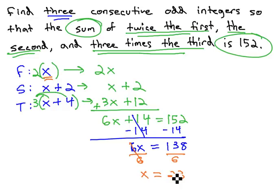23 is our first number, the x. The second number, 23 plus 2 is 25, and the third number, 23 plus 4 is 27.